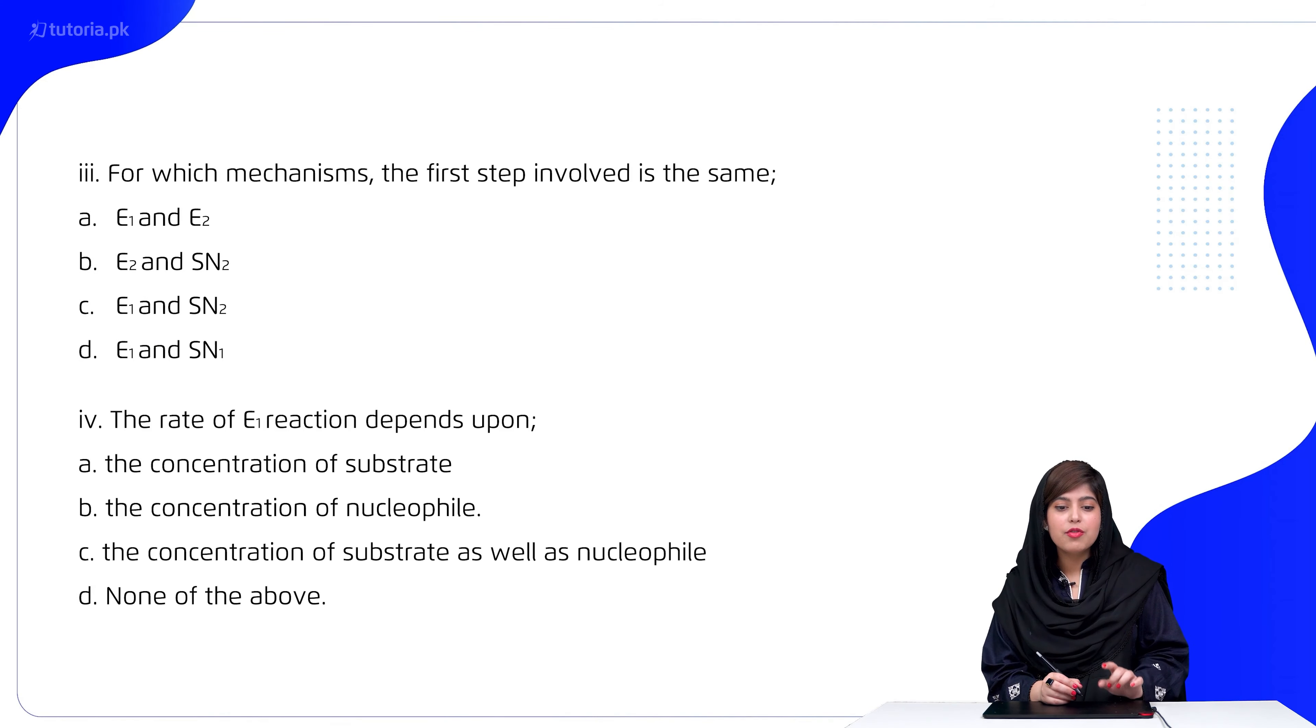Then students, for which mechanism the first step involved is the same? The first step is the same for E1 and SN1, which is ionization resulting in carbocation formation.